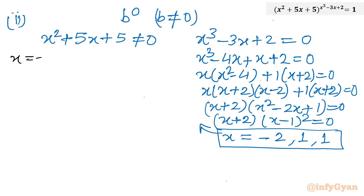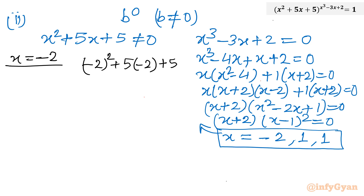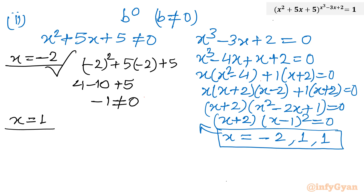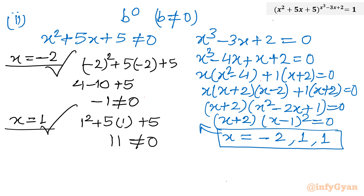Checking the base condition for Case 2. For x = -2: base = (-2)² + 5(-2) + 5 = 4 - 10 + 5 = -1, which is not zero — valid. For x = 1: base = 1 + 5 + 5 = 11, which is non-zero — also valid. Case 2 gives solutions x = 1 and x = -2.